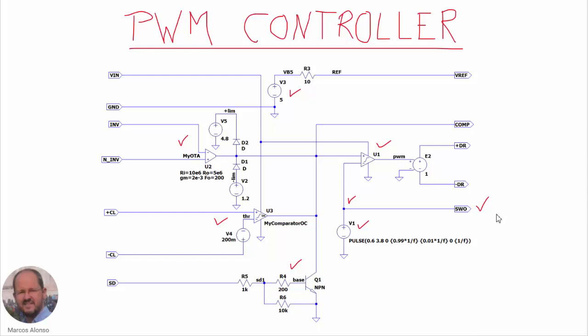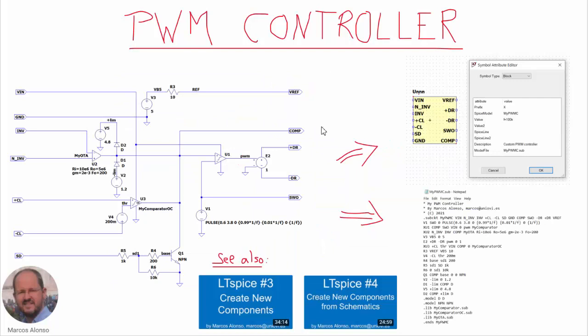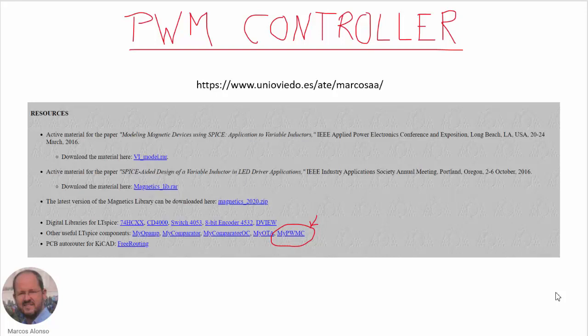From this schematic it is now possible to create both the symbol and the subcircuit description for our component, which we have named 'myPWMC' — my PWM controller — saved as a .sub file in Notepad. If you don't know how to do this, you can see the videos 'LTSpice Number 3: How to Create New Components' and 'LTSpice Number 4: How to Create New Components from Schematics.' To save time, you can also access the web page where this PWM controller component is available along with sample simulations.